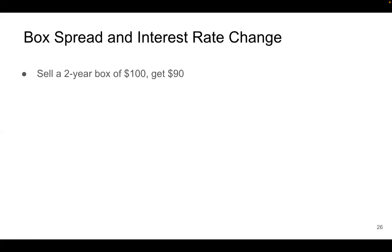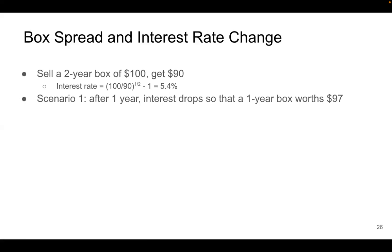Assume we have a two-year box. You sell it and get $90, so basically you paid $10 of interest. Taking the square root of the total interest rate, you can calculate that the annual interest rate is around 5.4%. In the first scenario, assume after one year the interest rate drops, so the one-year box is now worth a lot more than before. Similar to a bond, when interest drops the box price increases — so now it's worth $97. Using our formula, the interest rate is now 3.1%.